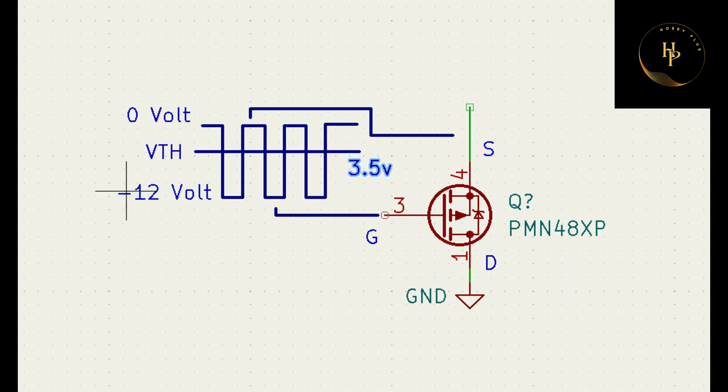When you get MOSFET minus 12 volt, MOSFET goes to on and fully on. Why? Because respect to source, gate voltage is minus.